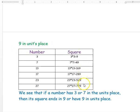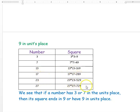The next digit is 9 in the unit place of a square number. If you take number 3, its square is 9. If you take 7, its square is 49. If 13 is the number, its square is 169. For number 17, its square is 289. For 23, its square is 529. For 27, its square is 729. So if a number's units digit is 3 or 7, its square will always end with 9 in its units place.